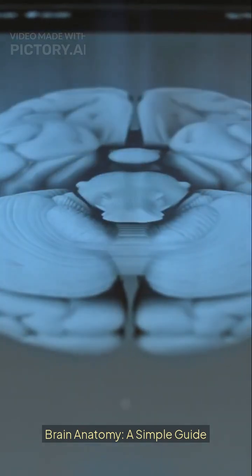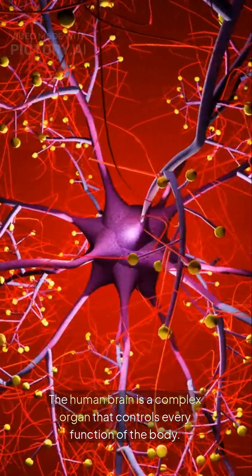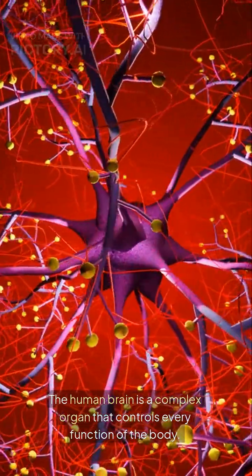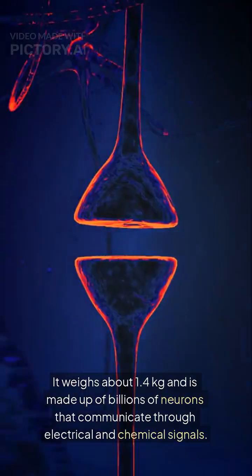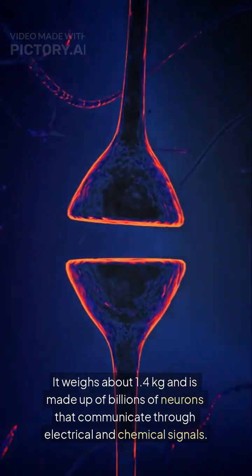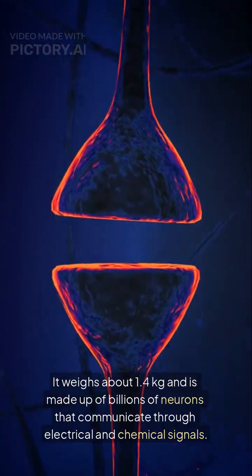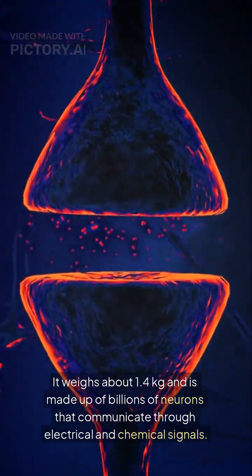Brain Anatomy: A simple guide. The human brain is a complex organ that controls every function of the body. It weighs about 1.4 kilos and is made up of billions of neurons that communicate through electrical and chemical signals.